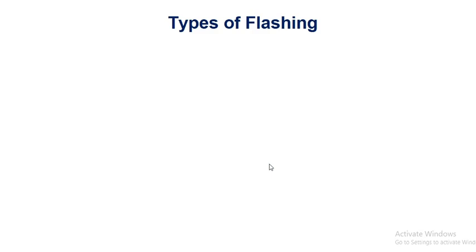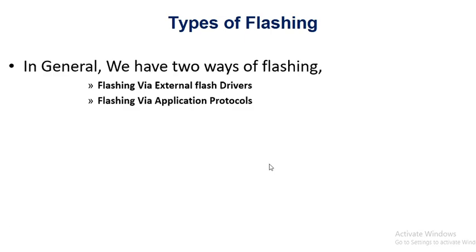So what are the types of flashing? In general, we can build flashing by two ways. One is by external flash drivers, and another one is via application protocols. External flash drivers use external hardware — through external debugger tools you flash the software, and that is called external flash drivers. Via application protocols, you can transfer the software to the chip through the application software itself.